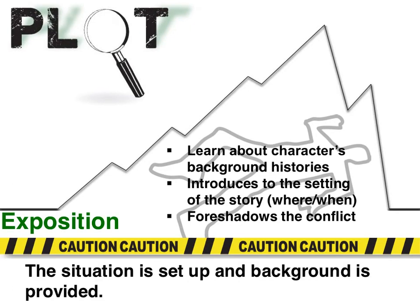First off, we have the exposition. This is where the situation is being set up for us. We are finding out what is taking place and getting our background information. So we're learning about the character — their background, if they're a boy or girl, all these character qualities, whether they're a main character or secondary character. We're also being introduced to the setting: where and when our story takes place. And then we're getting a little glimpse of the conflict, of what the problem might be, depending on the type of story you're working with.